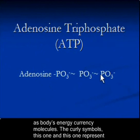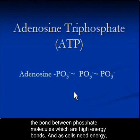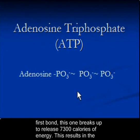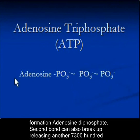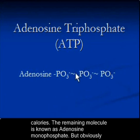The curly symbols represent the bonds between phosphate molecules, which are high-energy bonds. As cells need energy, the first bond breaks to release 7,300 calories of energy, resulting in the formation of adenosine diphosphate. The second bond can also break up, releasing another 7,300 calories, and the remaining molecule is known as adenosine monophosphate.